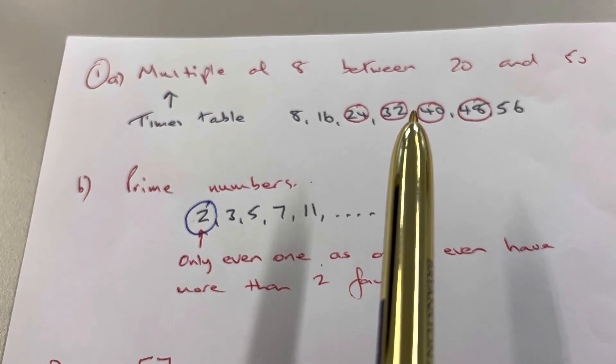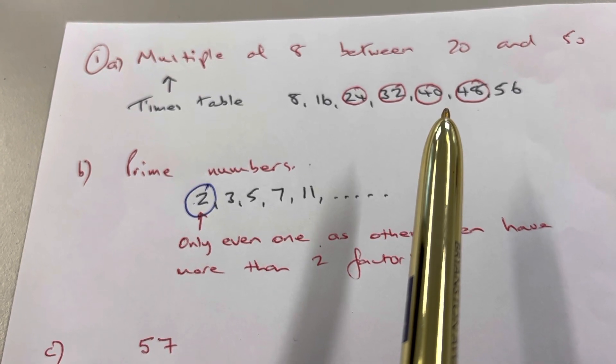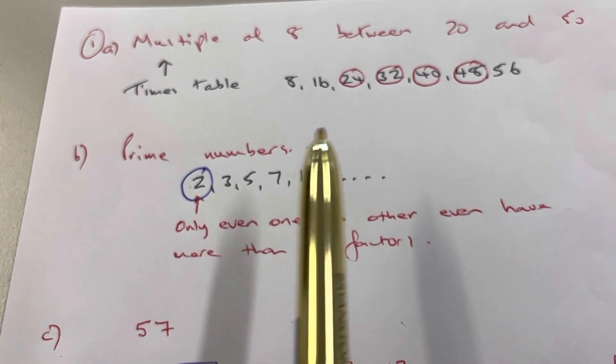Obviously, the numbers between 20 and 50 are 24, 32, 40, and 48. Any one of those four would be an acceptable answer. Part B.